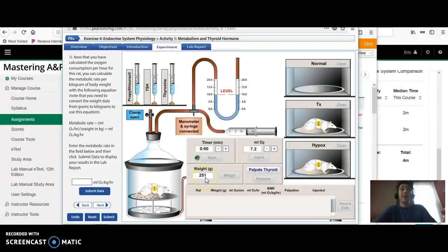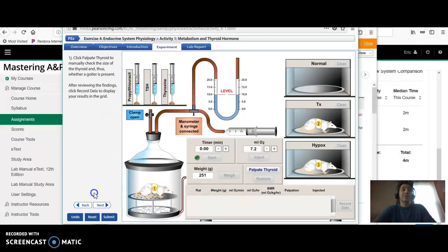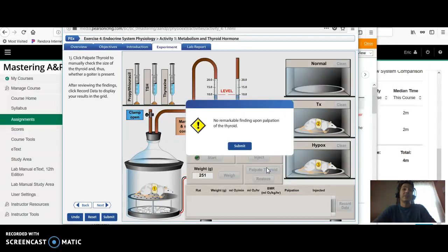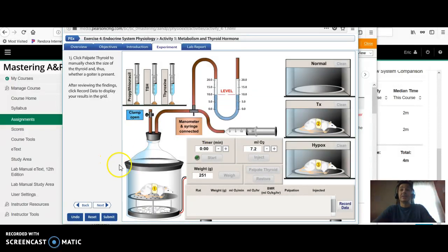This is the weight in grams, which are one thousandth of a kilogram. So if you divide your initial number, which is going to be 400 and something by 0.251, you'll get 1700 something. But you can just hit submit data. Then you click the palpate, which means feel the thyroid button to see if their thyroid is enlarged. Hit submit.